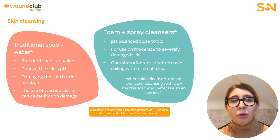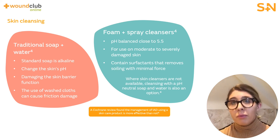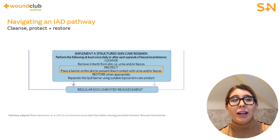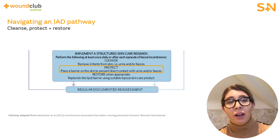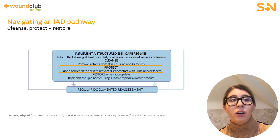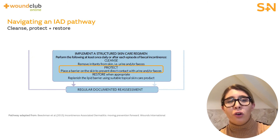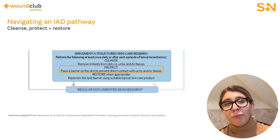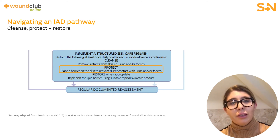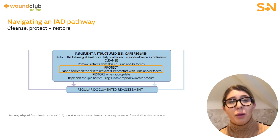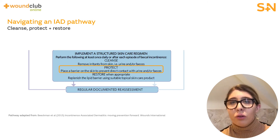Where skin cleansers are not available, cleaning with a pH-neutral soap and water is also an option. Once the skin has been cleansed, it needs to be protected from exposure to urine and or faeces to prevent IADs. Skin protectants are used in the prevention and treatment of IADs to form a barrier between the stratum corneum and any moisture or irritant. Skin protectants should also help promote resolution of IADs and allow the skin barrier to recover. They can come in different formats such as creams, pastes, lotions, or films, and should be applied on all skin which comes into contact with or is at risk of contact with urine and or faeces.